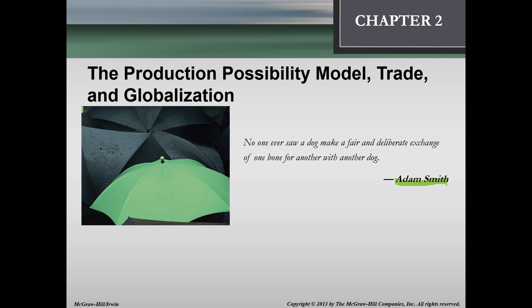Hello. In this lecture we're going to talk about the production possibility model, trade and globalization, chapter two. We'll start with a quote from Adam Smith, the father of economics. He says that no one ever saw a dog make a fair and deliberate exchange of one bone for another with another dog. What this gets at is that one of the things that differentiates people from animals is the ability to negotiate and trade, and by trading we tend to be better off through that mutual agreement.